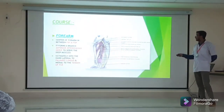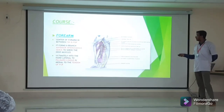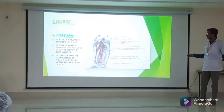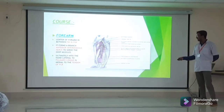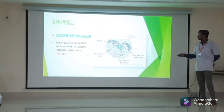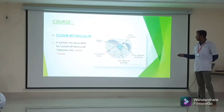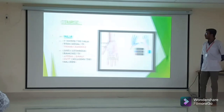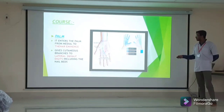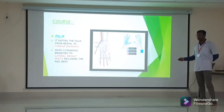In the forearm, the median nerve lies in a central position between flexor digitorum superficialis and flexor digitorum profundus. It forms a branch called the anterior interosseous nerve to supply the deep muscles. It then passes lateral to palmaris longus and medial to the tendon of flexor carpi radialis, going deep to the flexor retinaculum through the carpal tunnel. In the palm, it lies medial to the thenar eminence and gives cutaneous branches to the lateral three and a half digits including their nail beds.